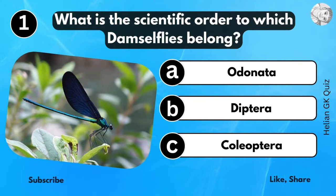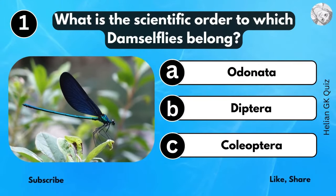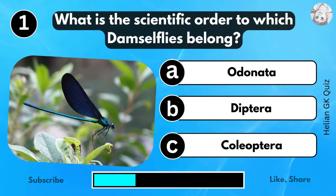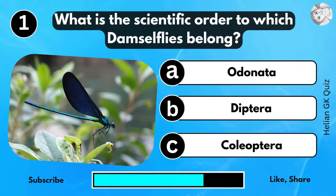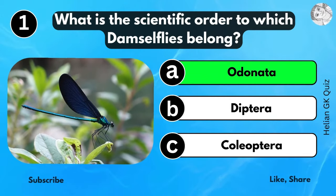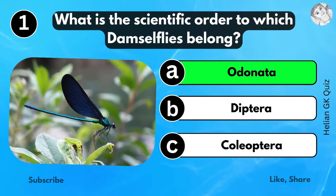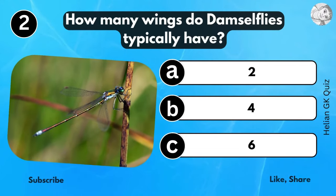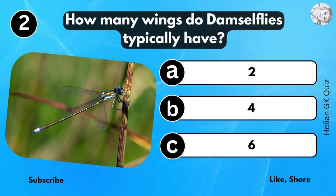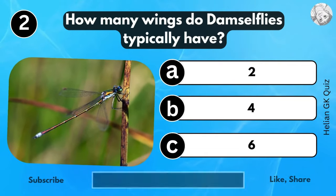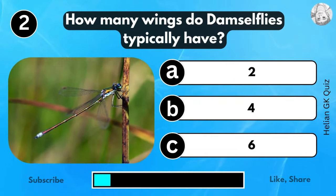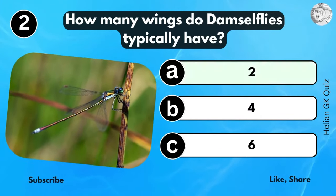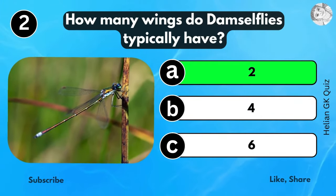What is the scientific order to which damselflies belong? Odonata. How many wings do damselflies typically have? Two wings.